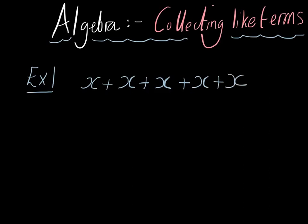Well, how many x's have we got? We've got 1x, plus another x is 2x, plus another x is 3x, plus another x is 4x, plus another x is equal to 5x and we're done. So that's example 1.